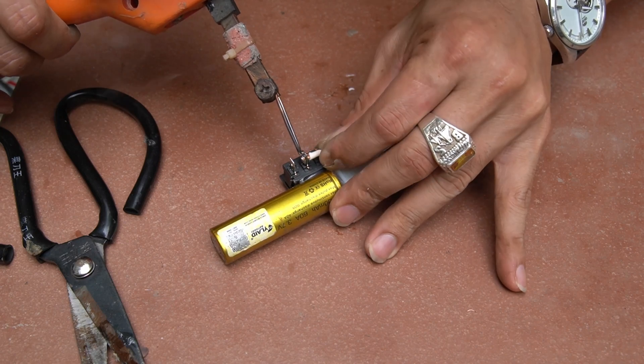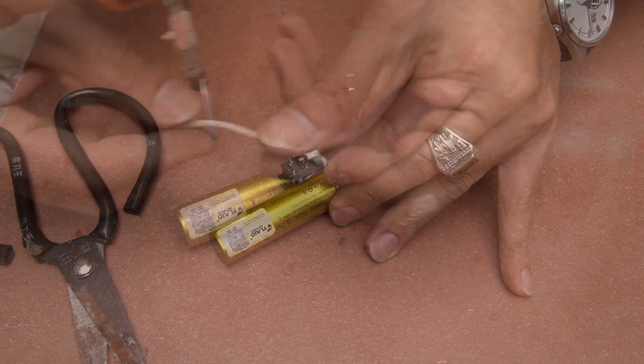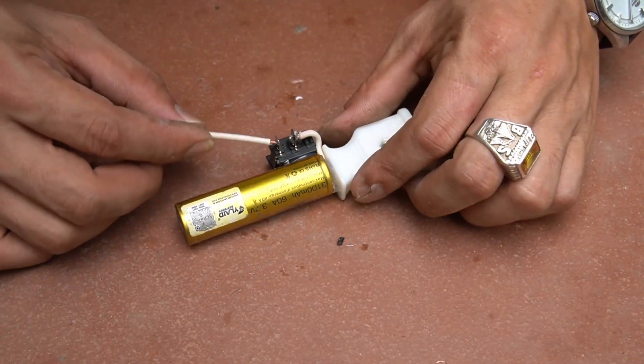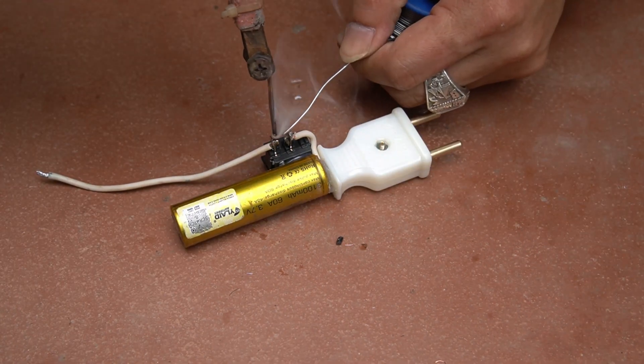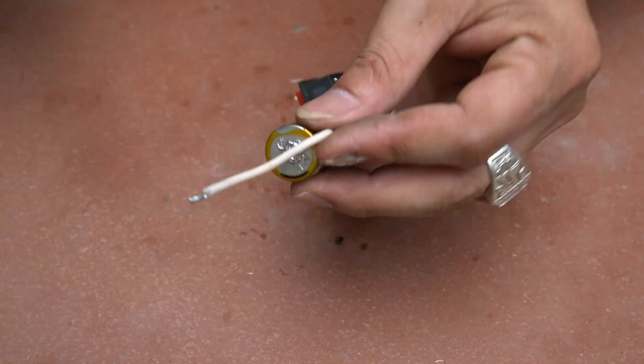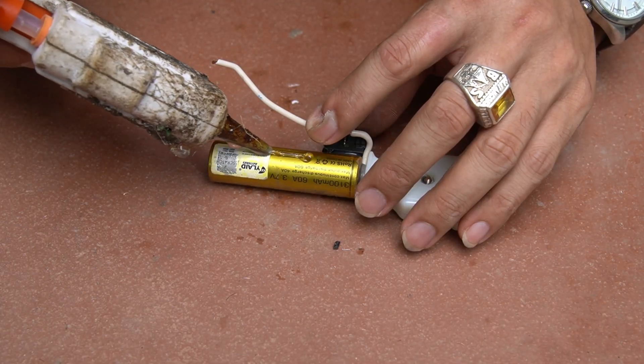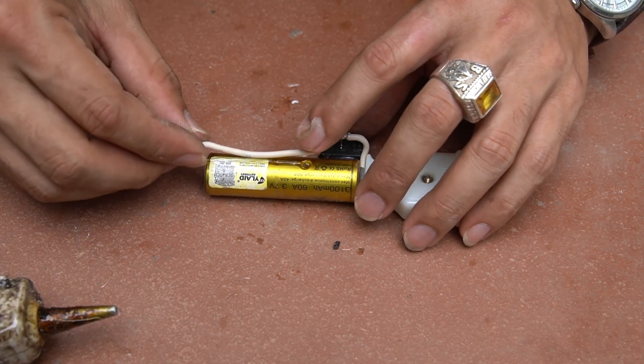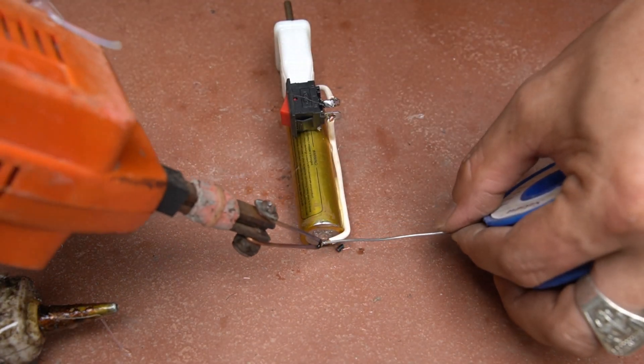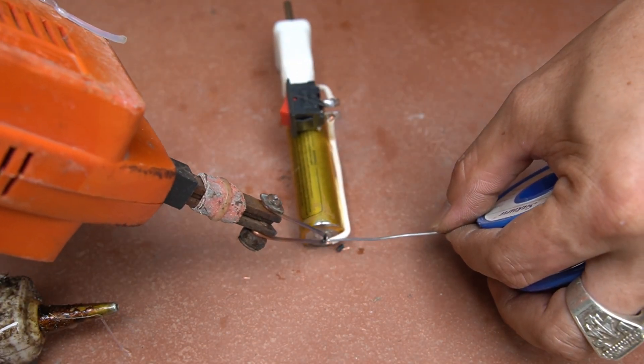Use a soldering iron to connect the wire to one pole of the switch. The other pole I will use wire to connect to the battery.